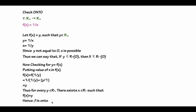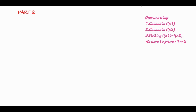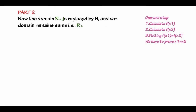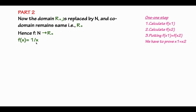Now, the domain R* is replaced by N (natural numbers), and the co-domain remains the same, that is R*. So the function is now defined as f from N to R*, with f(x) = 1/x.